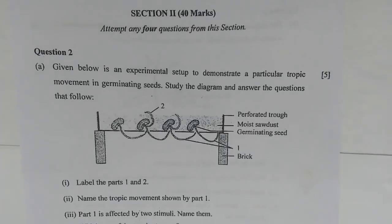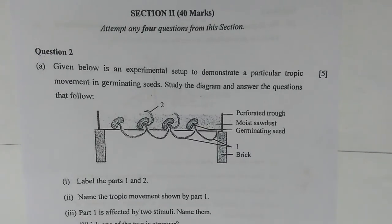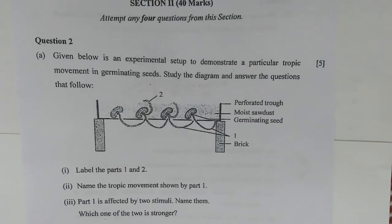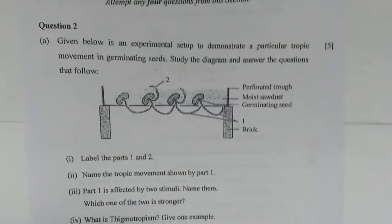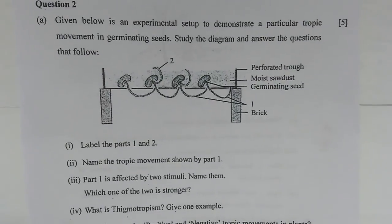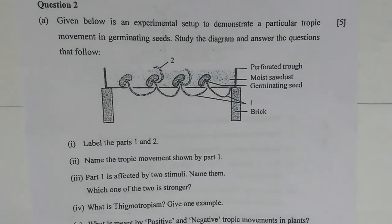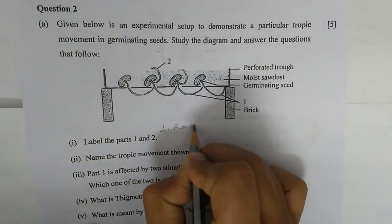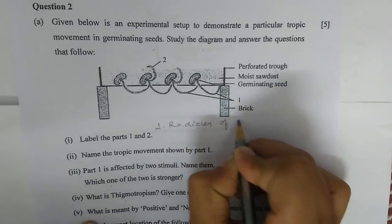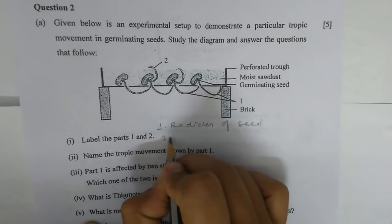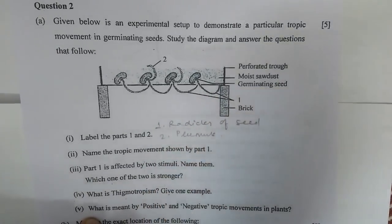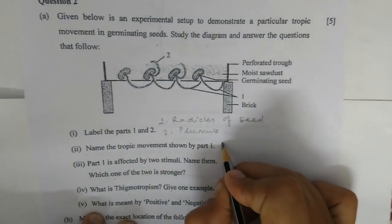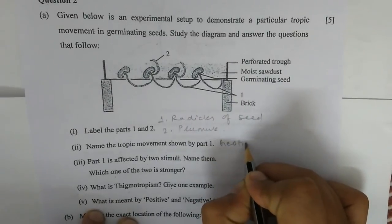Question 2a: Given below is an experimental setup to demonstrate a particular topic movement in germinating seeds. Study the diagram and answer the questions. Number one — label parts one and two. Part one is the radicle of the seed and part two is the plumule. Number two — name the tropic movement shown by part one. It is geotropic movement.